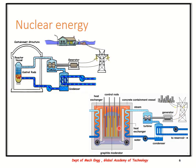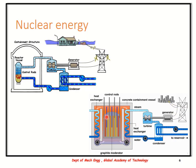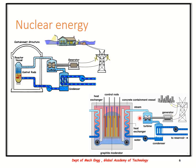Depending on the type of reactor used, the water is either directly in contact with the nuclear fuel or it could be separate. But in both cases, the heat liberated by the nuclear fission reaction is utilized. The water absorbs the heat, which is then converted into steam and made to pass through a steam turbine to extract electrical energy.